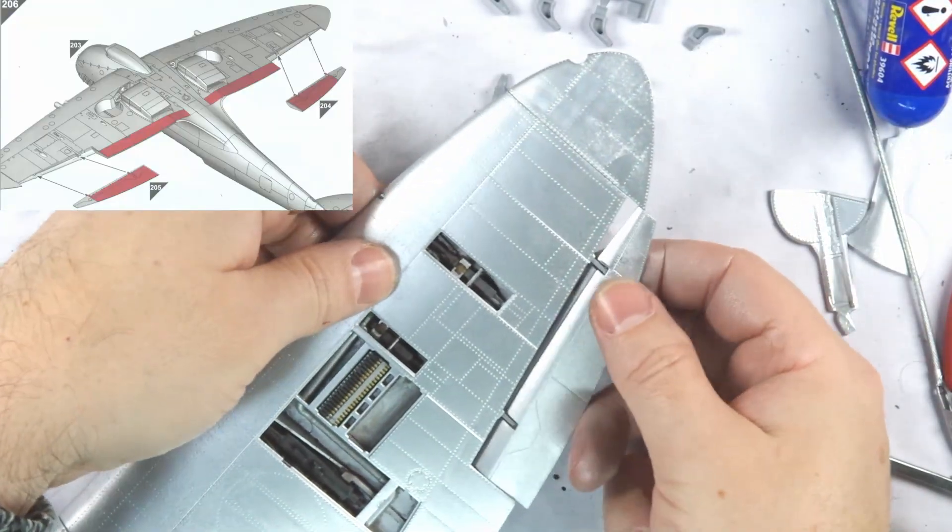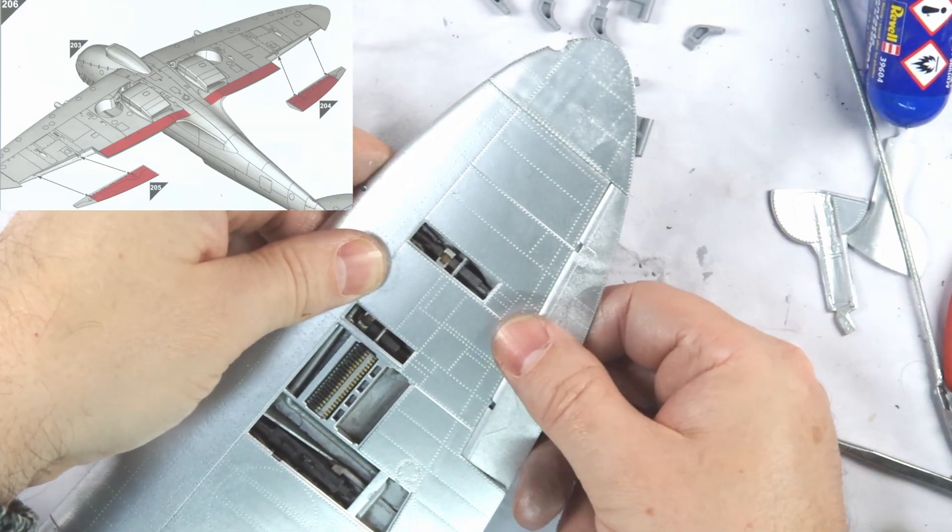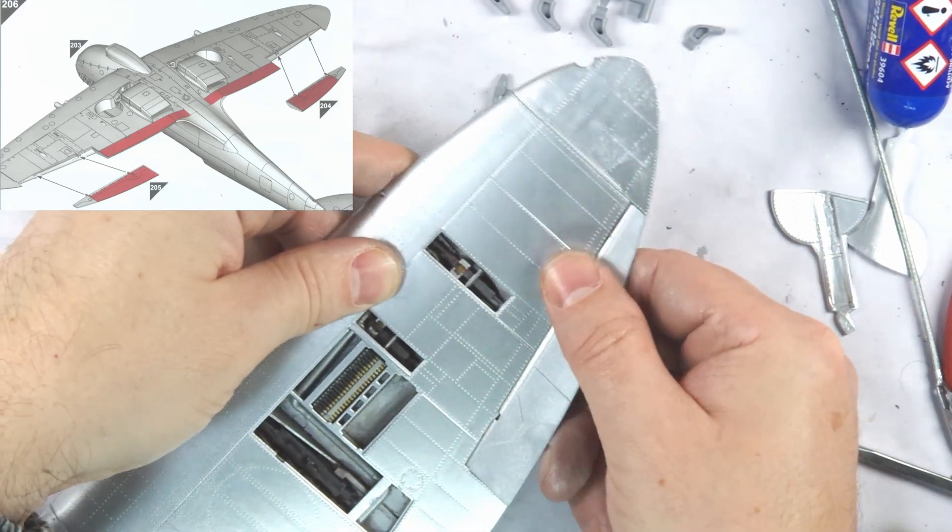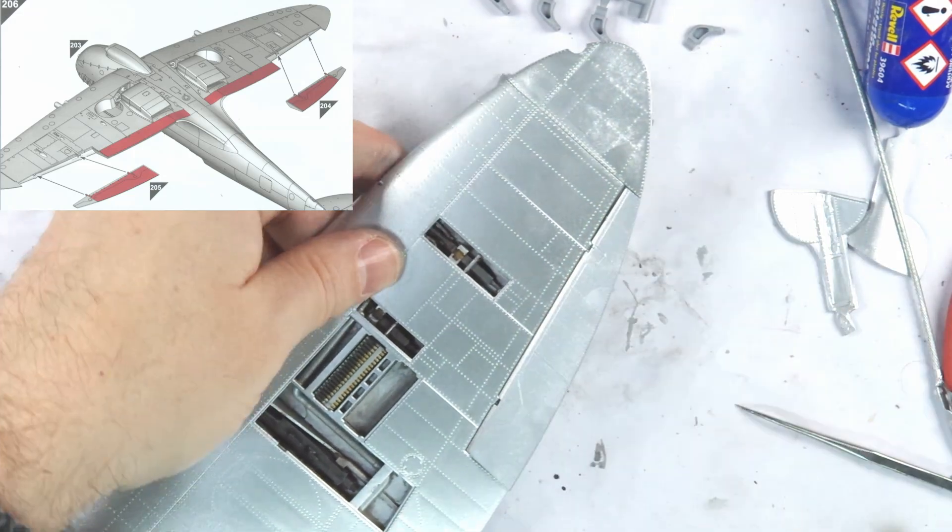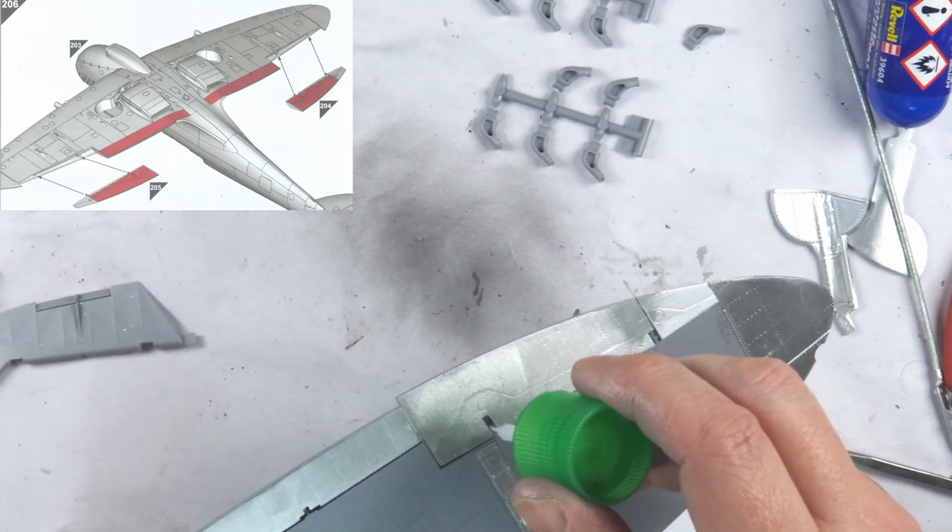We can then attach the ailerons onto the wing in step 206. The two segments in the subassembly slide very positively into their locating positions; just make sure they're pushed forward sufficiently before you cement them.